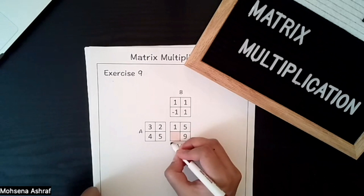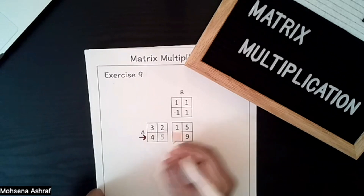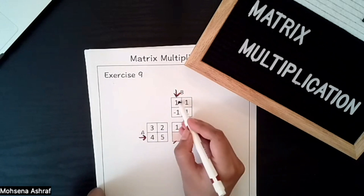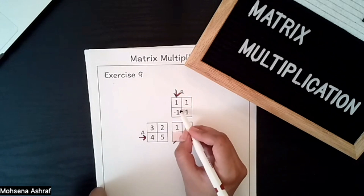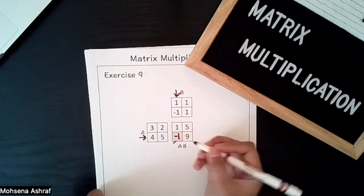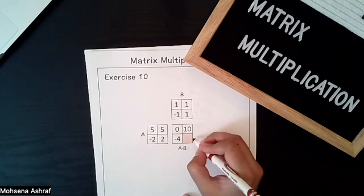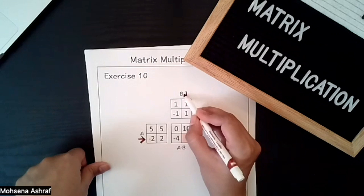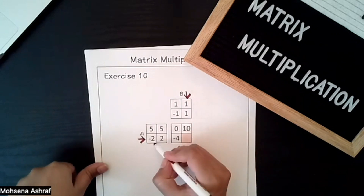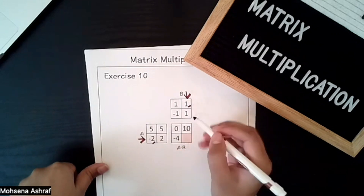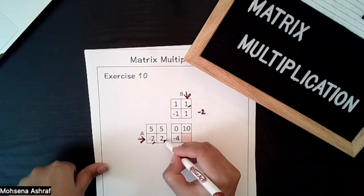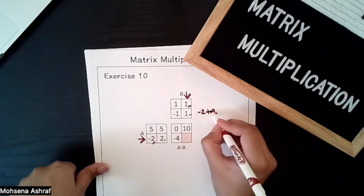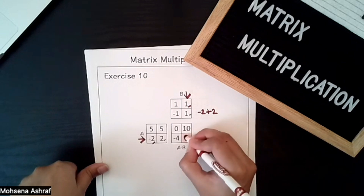We also have to find more values. Multiplying the second row with the first column: 4×1 + 5×(−1) = −1. For the next empty field, multiplying this row by this column: (−2)×1 + 2×1 = −2+2 = 0.